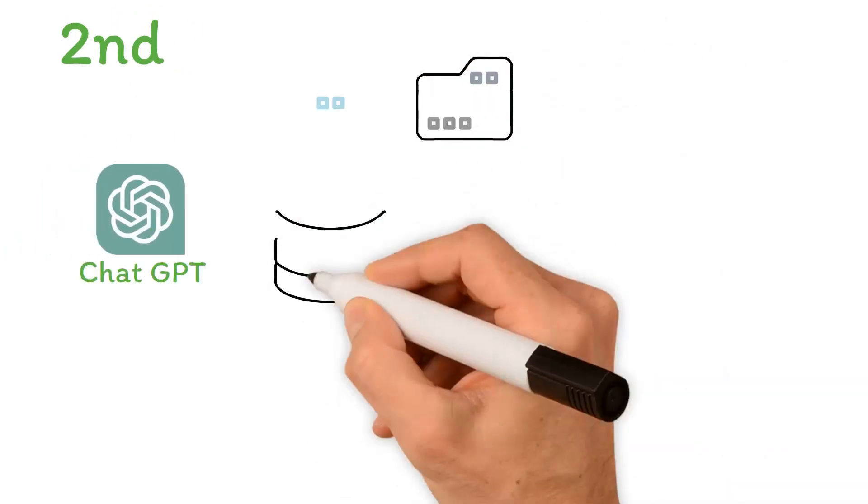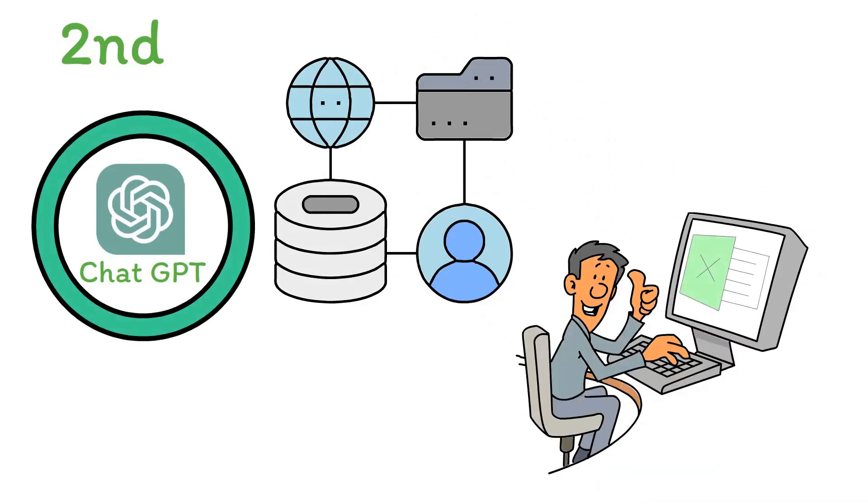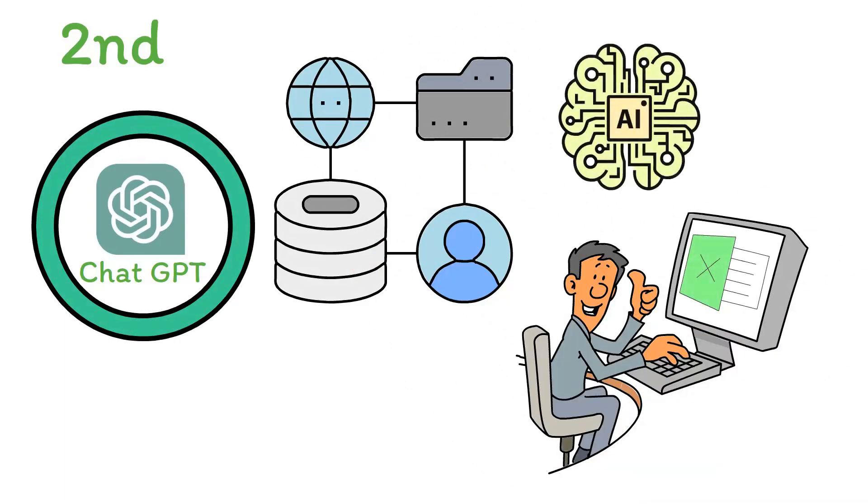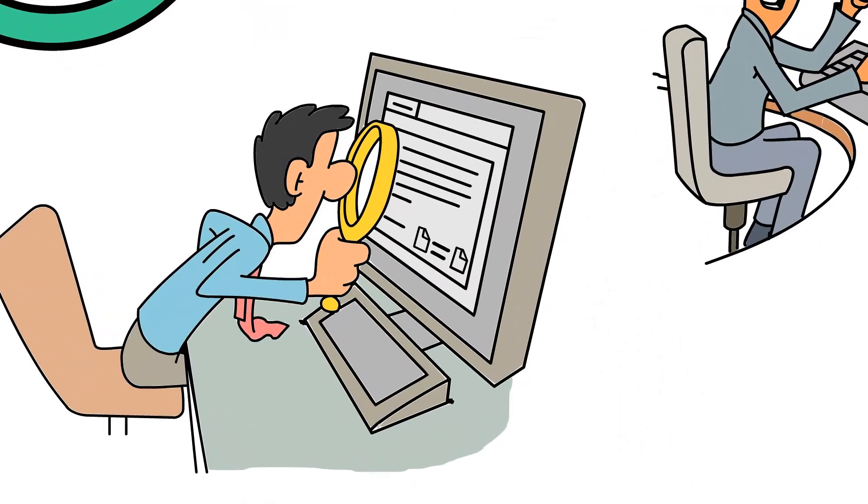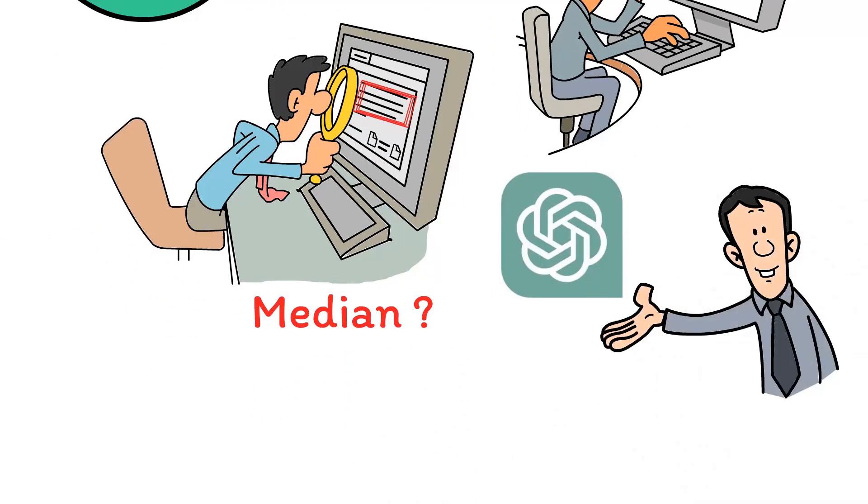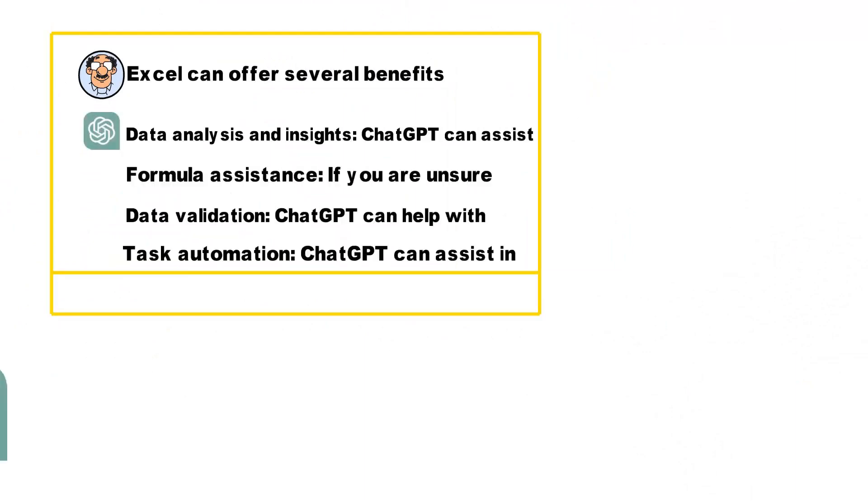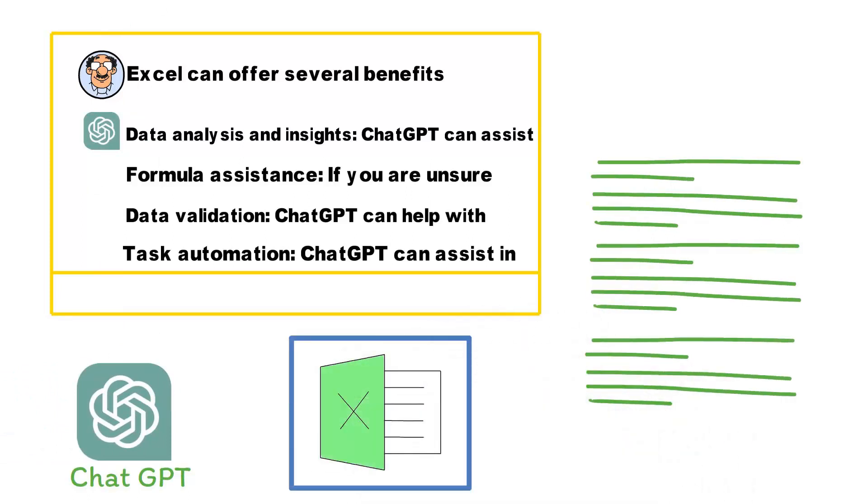Secondly, ChatGPT's deep learning abilities facilitate nuanced understanding and assistance. You can ask complex or specific questions about Excel, and the AI will attempt to provide relevant, concise responses. For example, if you have a dataset with complex requirements, such as needing to find the median of a group of numbers but only for certain criteria, you can explain the situation to ChatGPT, and it can guide you on the functions and steps needed. ChatGPT's ability to understand and respond to context-dependent queries makes it an excellent tool for improving your Excel problem-solving skills.